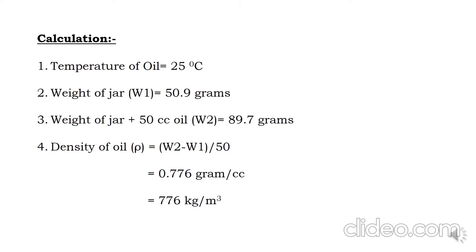Density will be W2 minus W1 divided by 50, that is 0.776 gram per cc or 776 kg per cubic meter.